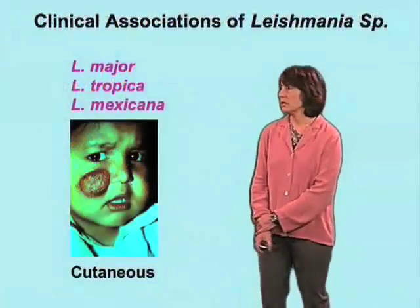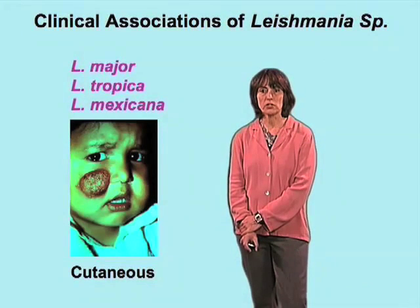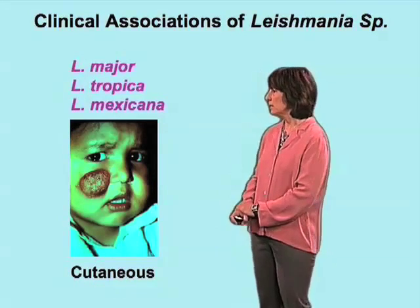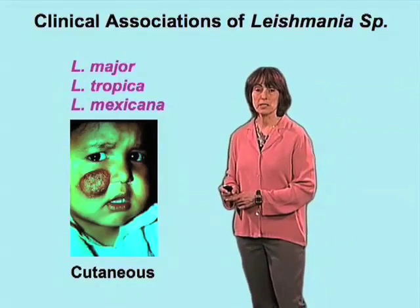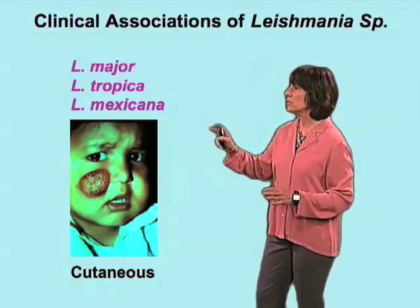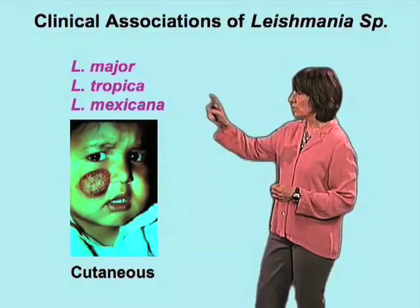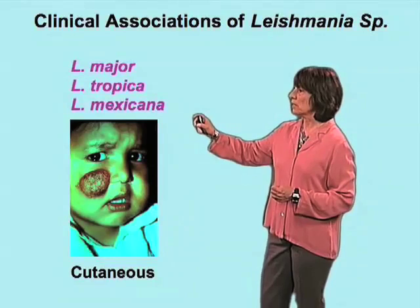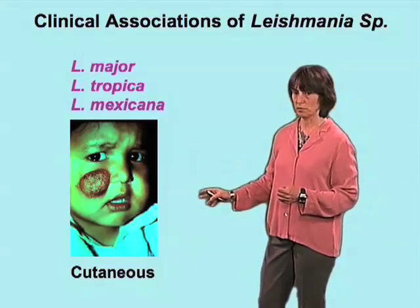Here we see an example of one of the clinical manifestations of Leishmaniasis. This is a child with a cutaneous lesion, which — the form of the disease in Leishmaniasis is directly associated to the species of Leishmania that causes the infection. These three species — L. major, L. tropica, and L. mexicana — are frequently associated with the cutaneous form of the disease.